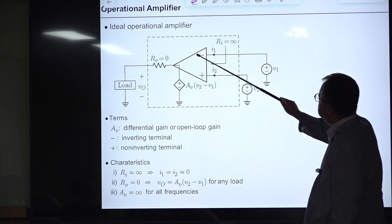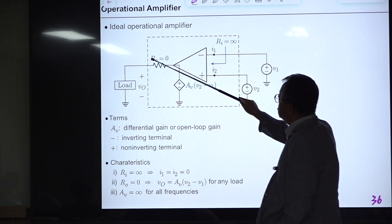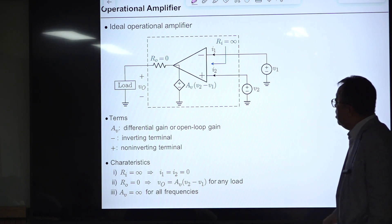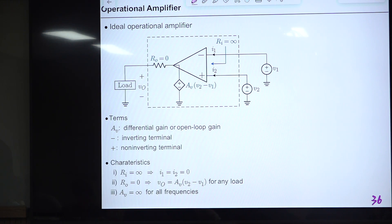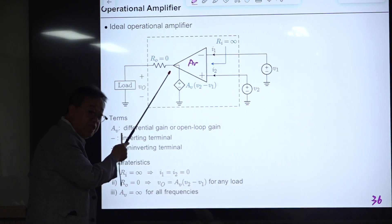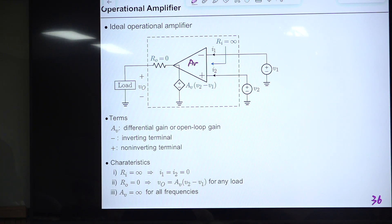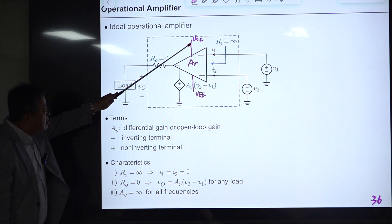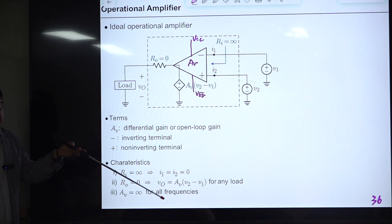For the ideal op-amp, A_V is infinite for all frequencies. In practice, the op-amp has a dominant low-frequency pole — intentionally designed with an internal capacitor — giving it a first-order low-pass characteristic with about 20 dB/decade rolloff. The classic example is the 741 op-amp, which has roughly 140 dB DC gain and is still widely used.